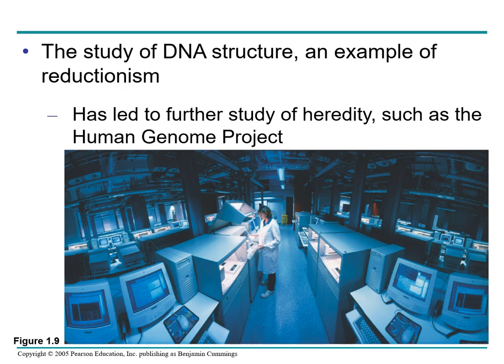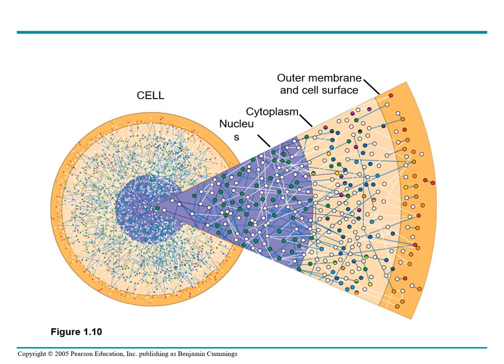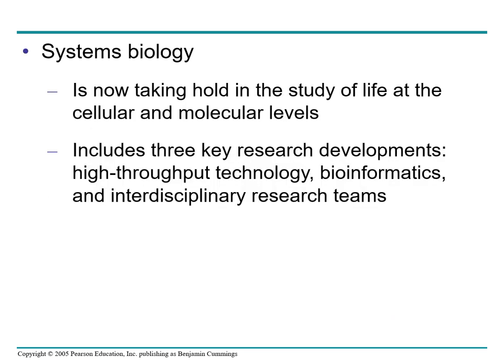The study of DNA structure is an example of reductionism and has led to further study of heredity such as the human genome project. System biology seeks to create models of the dynamic behavior of whole biological systems. With each model, scientists will be able to predict how a change in one part of the system will affect the rest of the system. System biology is now taking hold in the study of life at the cellular and molecular level, and includes three key research developments: high-throughput technology, bioinformatics, and interdisciplinary research.